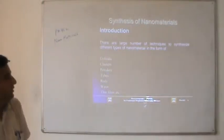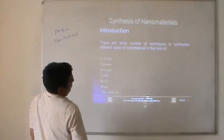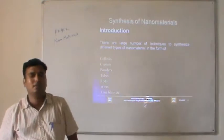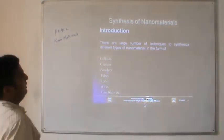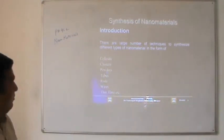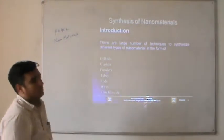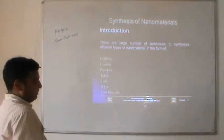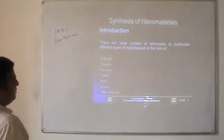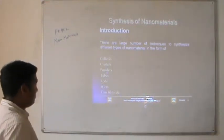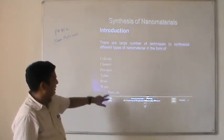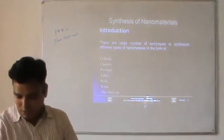This is the synthesis of nanomaterials. Here we will discuss the quantum mechanics, introductory part about nanomaterials with their applications and some fundamental problems or issues with nanomaterials. Different types of nanomaterials include colloids, clusters, powders, tubes, rods, wires, or thin films. We will talk about cluster, powder, and tube nanomaterials as the most important ones discussed in this part.